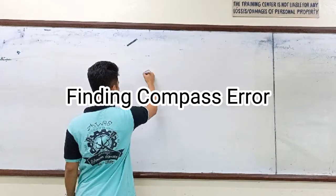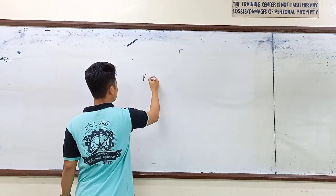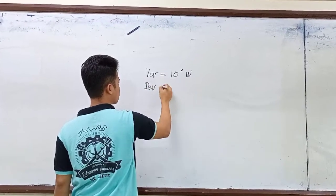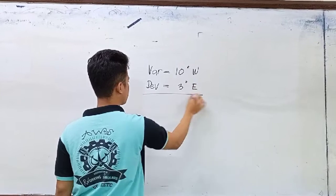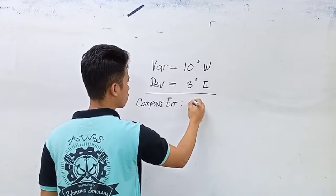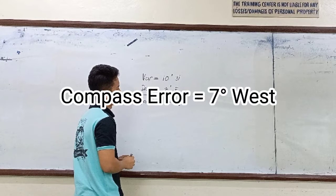Now we have a scenario in which we determine compass error if the variation is 10 degrees west and the deviation is 3 degrees east. We simply subtract these two because if they have the same name we add, but if they have different names we subtract. So we get the compass error of 7 degrees westerly, because the greater value of 10 degrees is west.